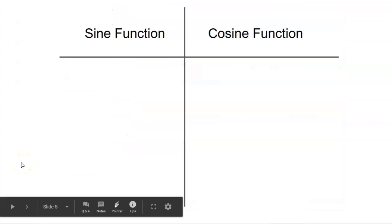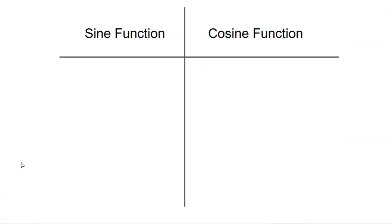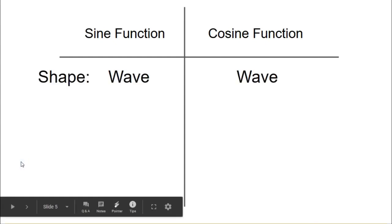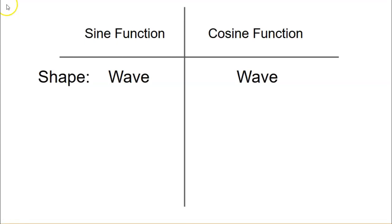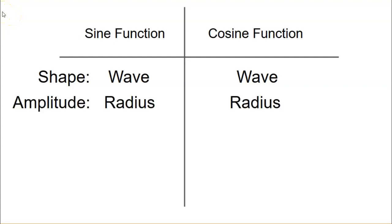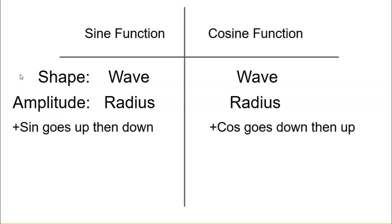Let's capture some similarities and differences between the sine and cosine functions. First, they both make waves — they are both periodic functions and their waves look almost identical; they're essentially the same shape. Both sine and cosine involve spinning around the circle, which gives their graphs the same shape. Also, the amplitude of the wave — how high and how low it goes — is determined by the radius, which makes total sense since they're both on the same circle.